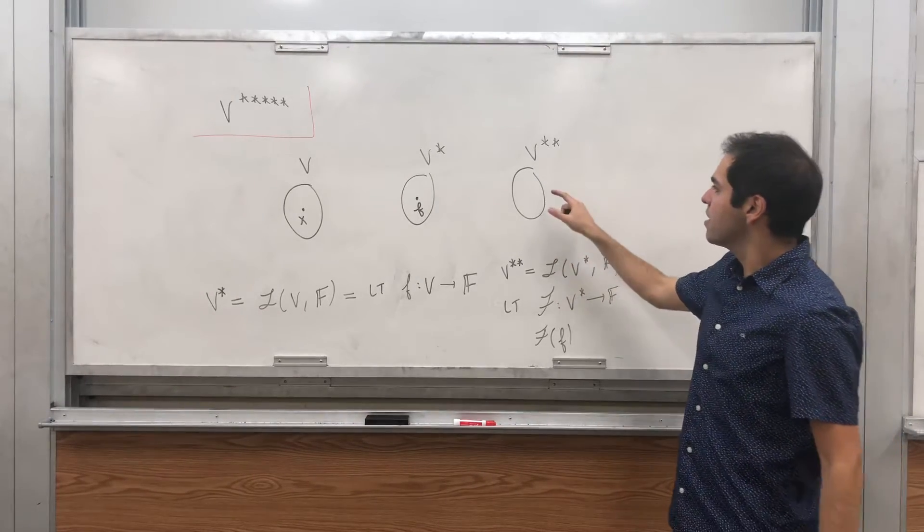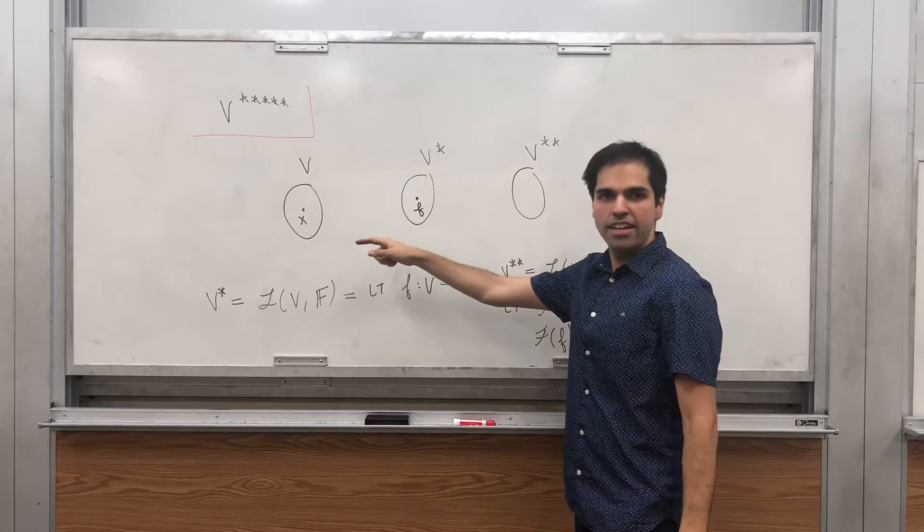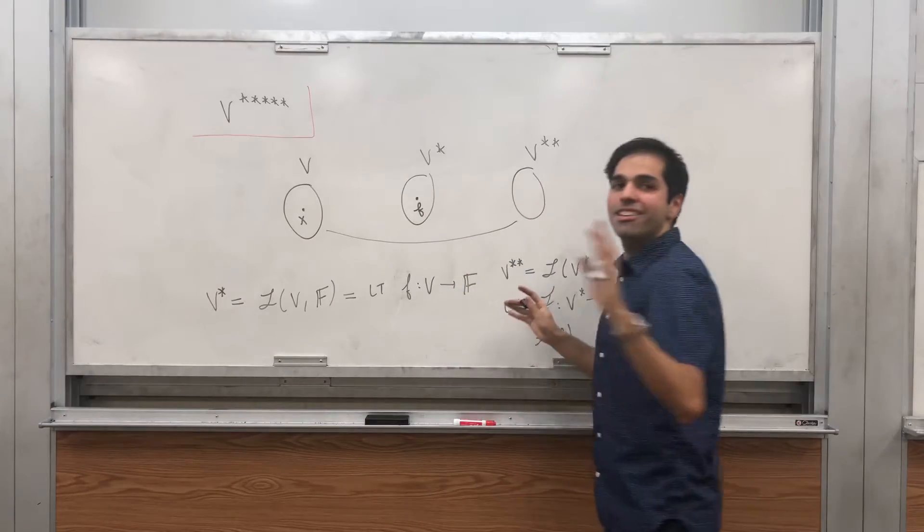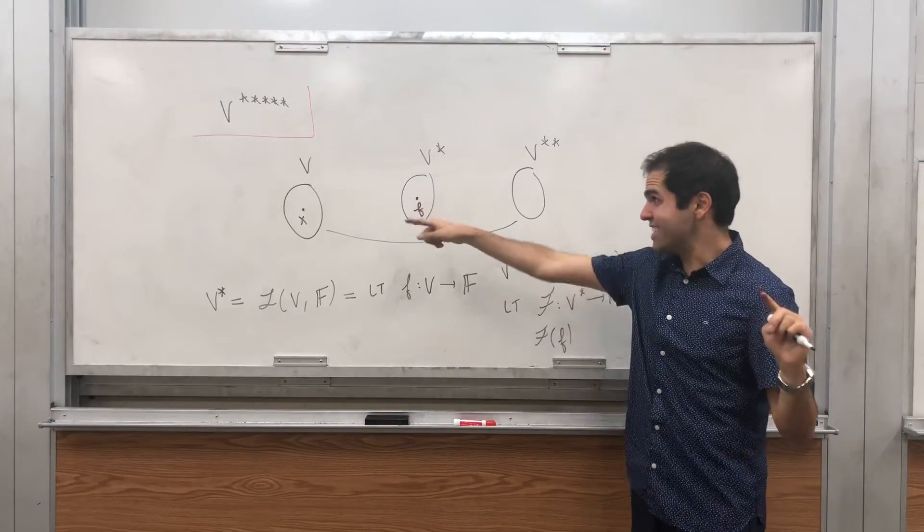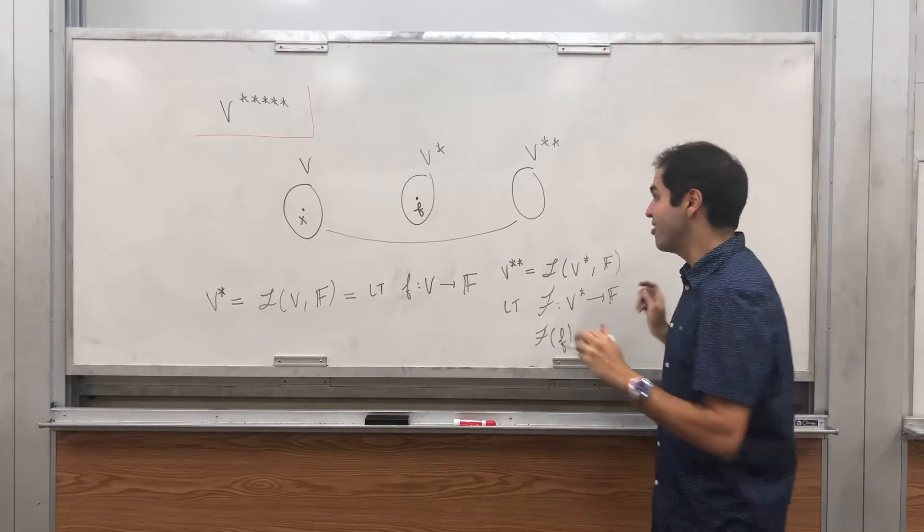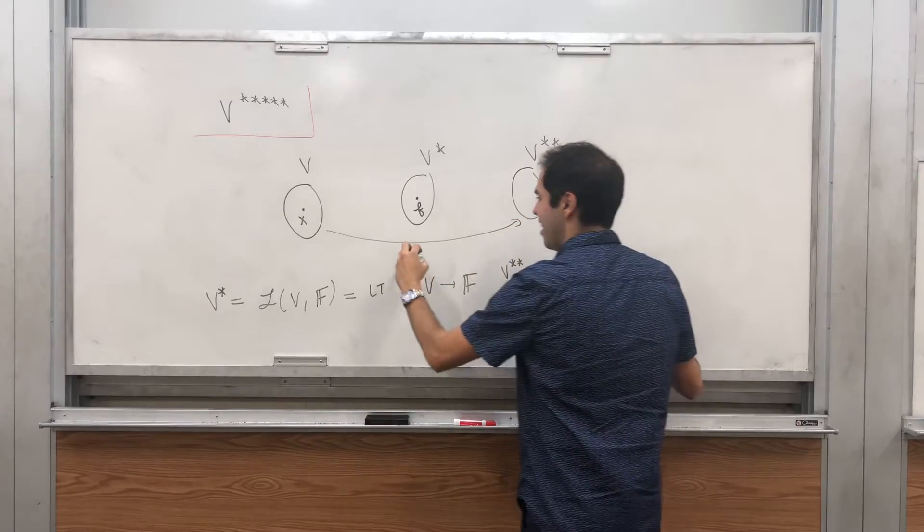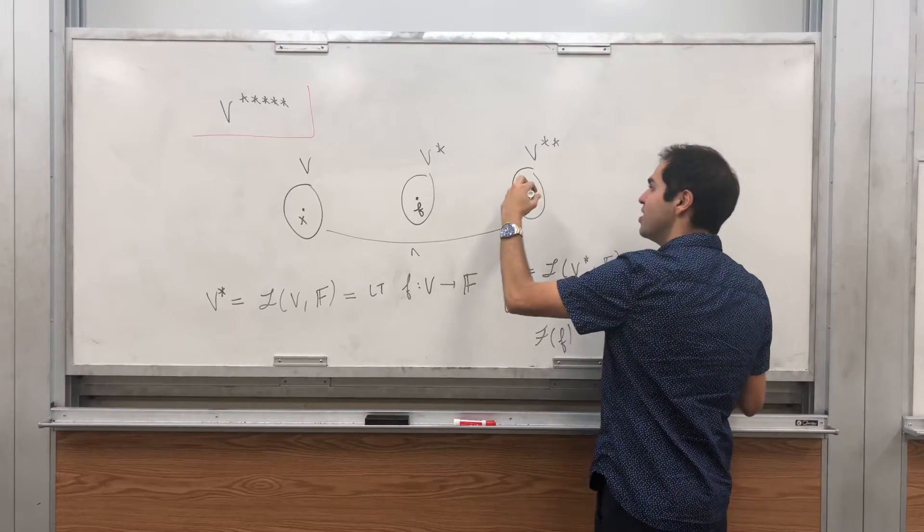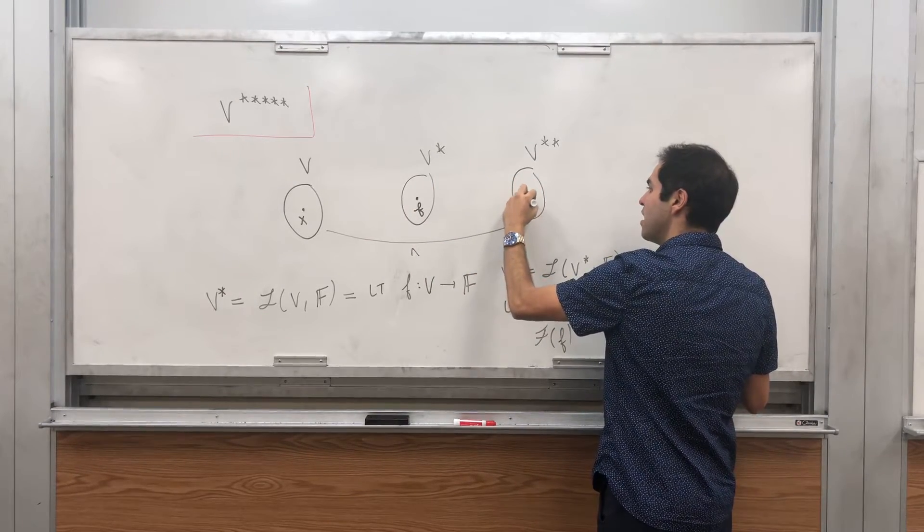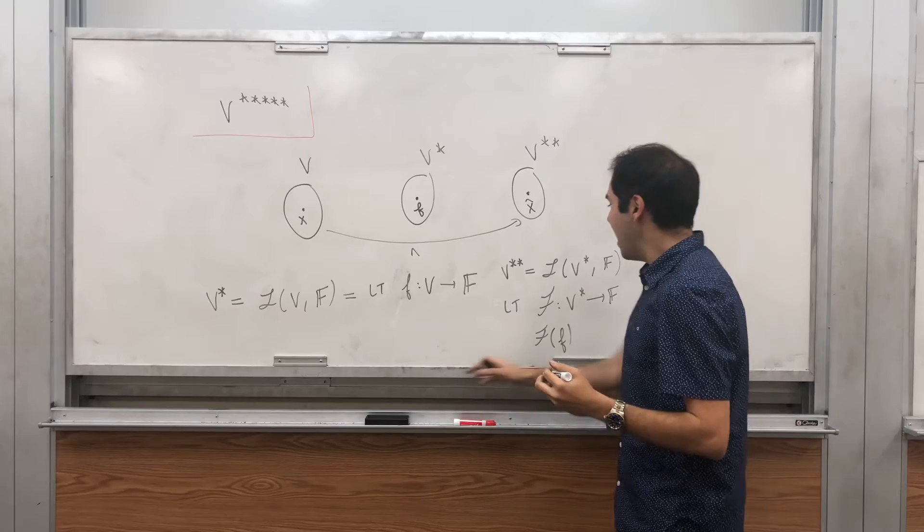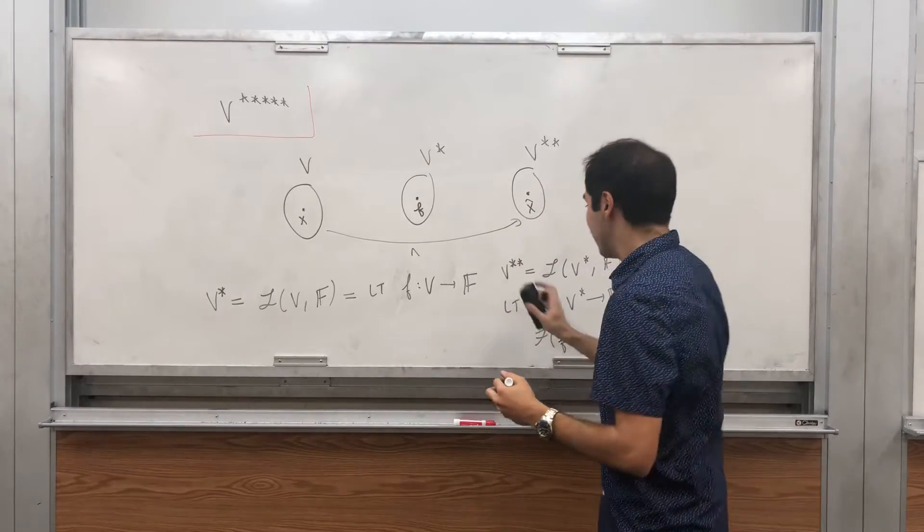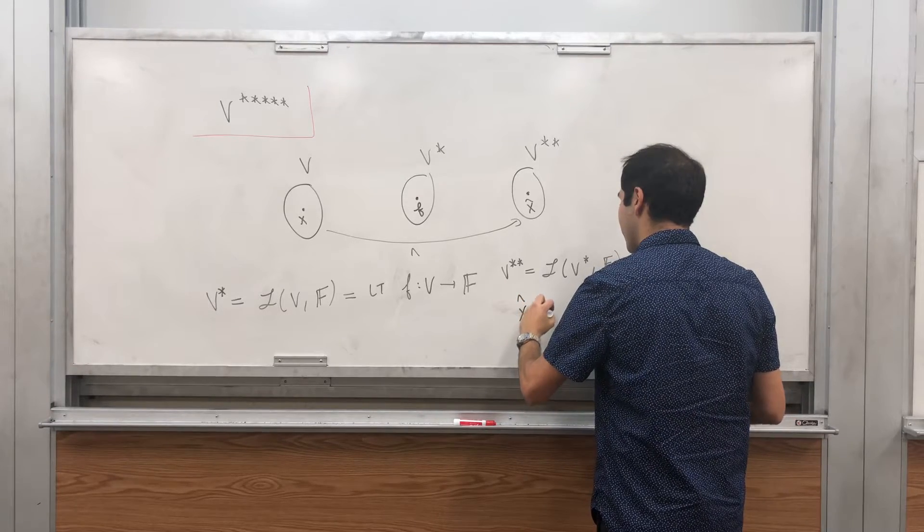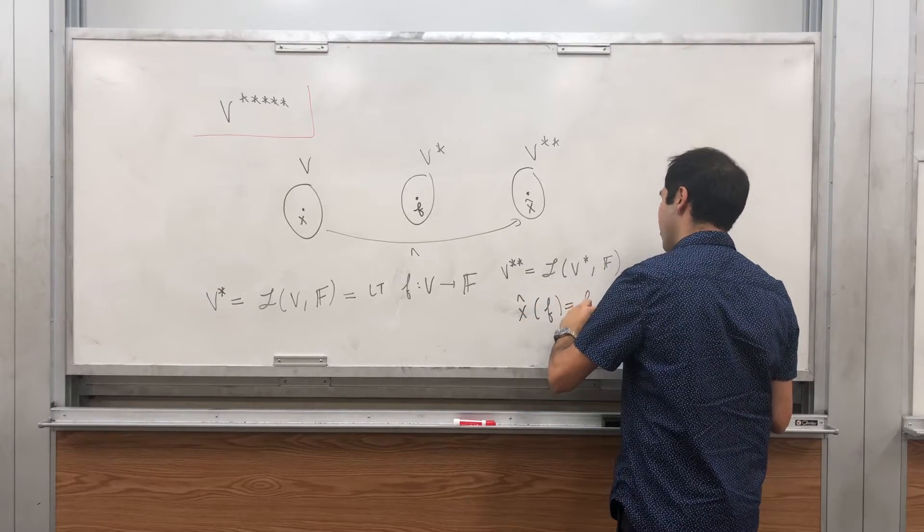It turns out we never use that definition because there's actually a very nice isomorphism between V and V double star, in finite dimensions. It's the hat transformation, and it just associates X to X hat, where X hat of F is F of X.